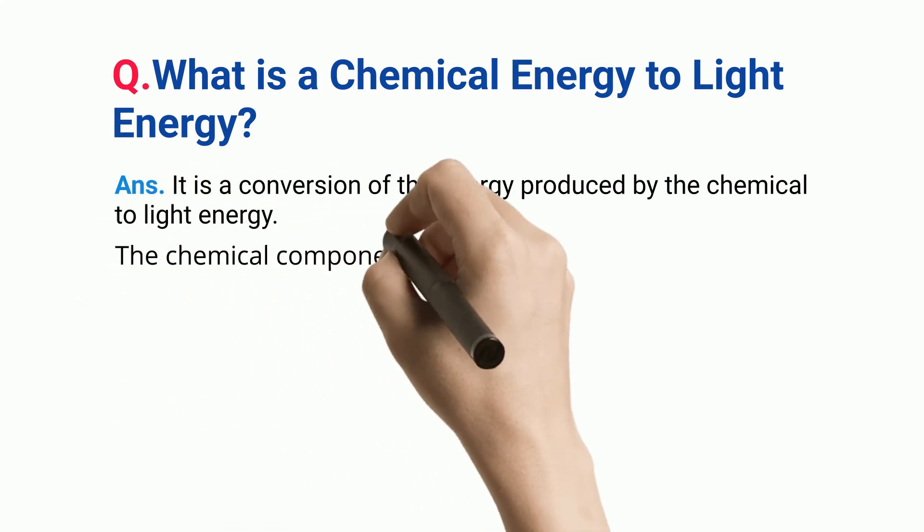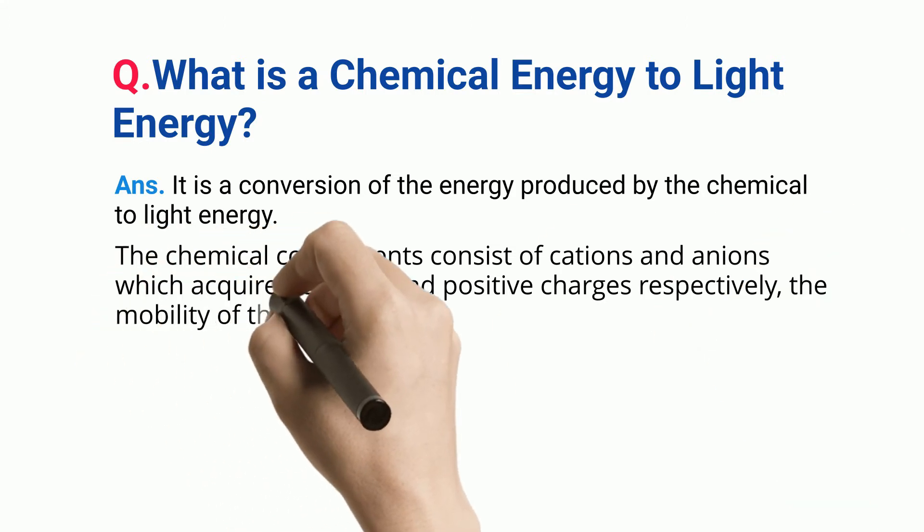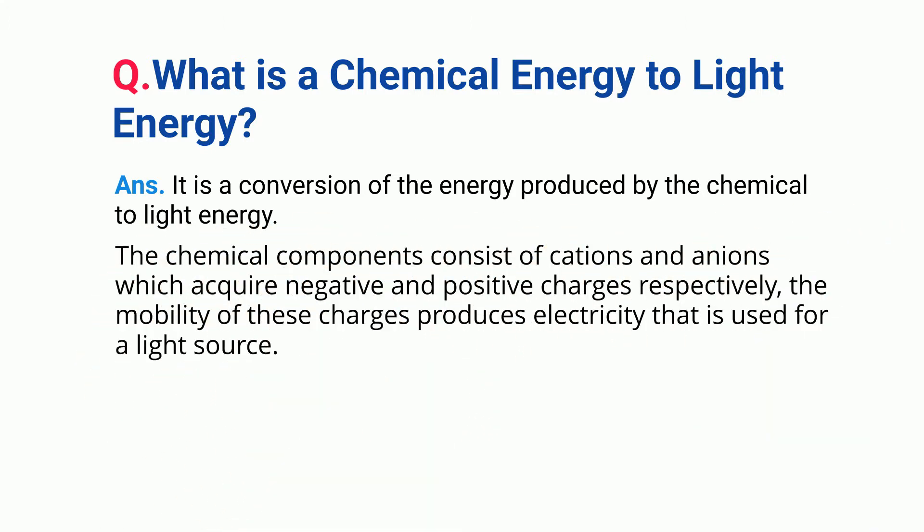The chemical components consist of cations and anions which acquire negative and positive charges respectively. The mobility of these charges produces electricity that is used for a light source.